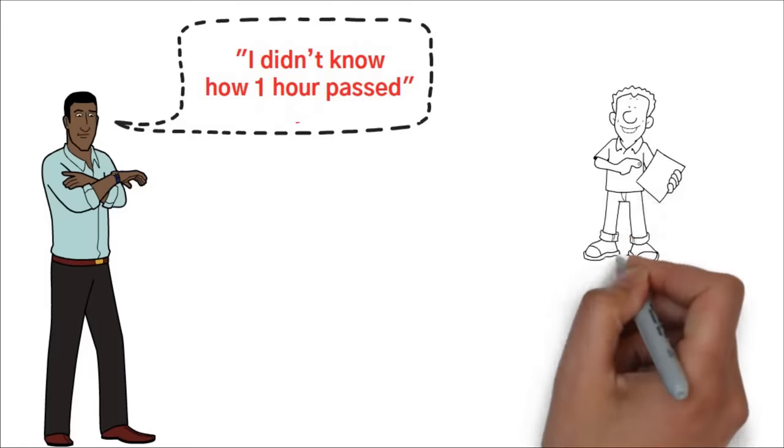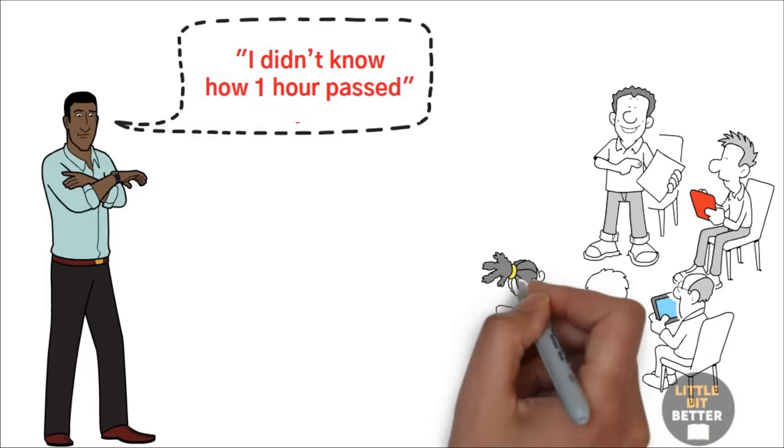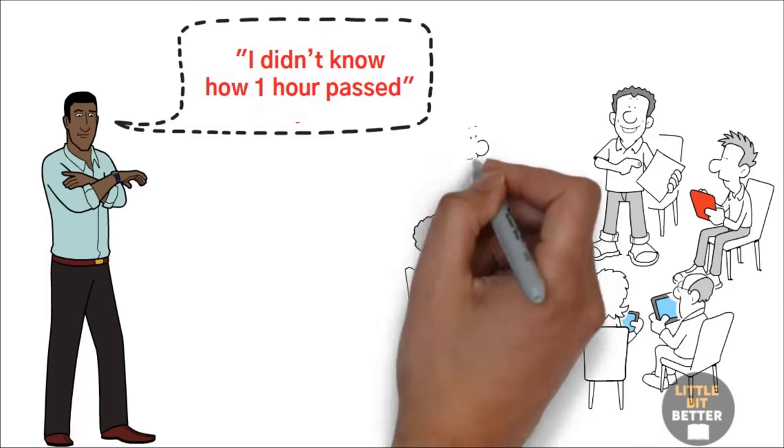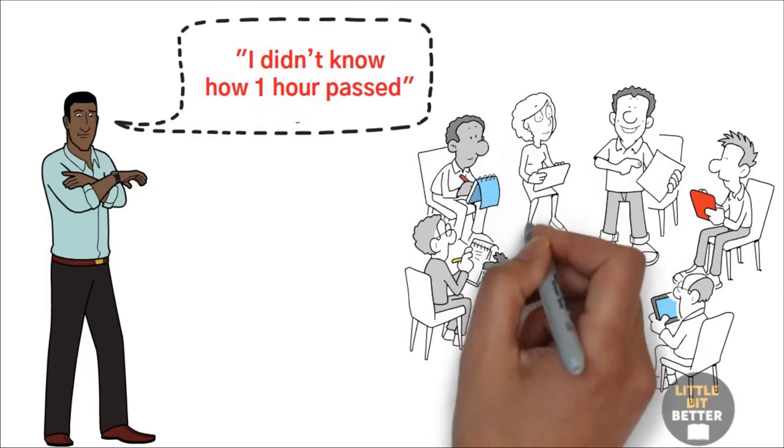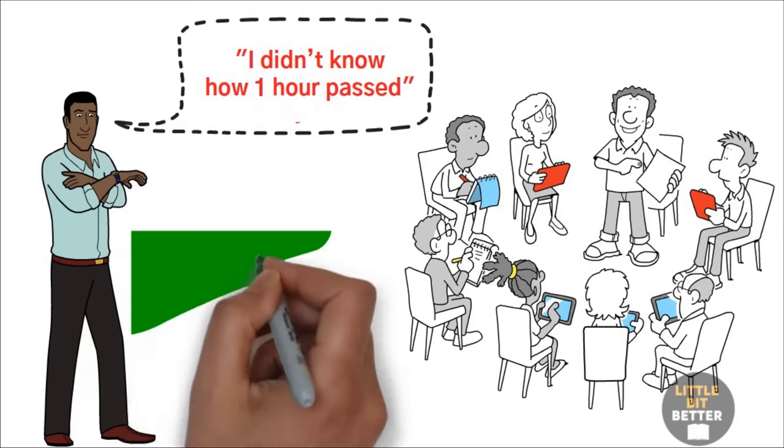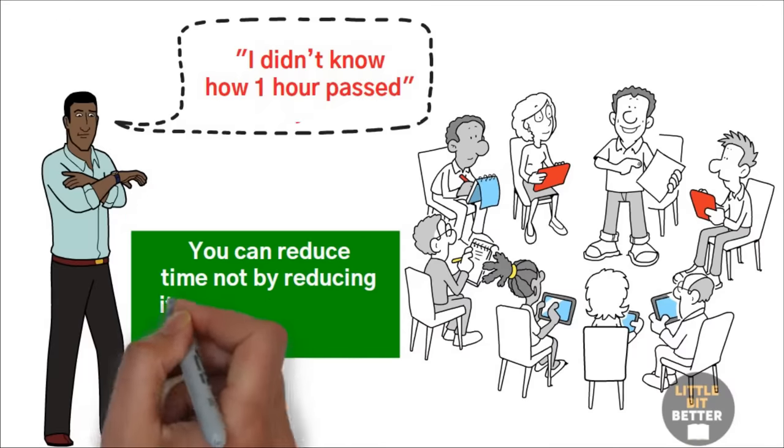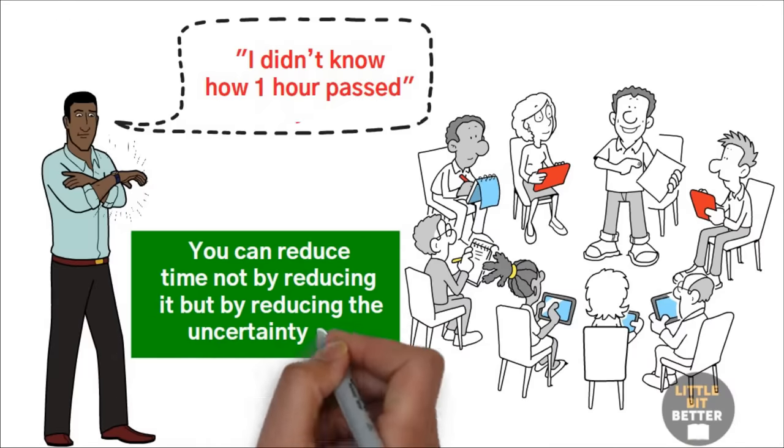We perceive time differently depending on what we do during that time. For example, you have probably said things like, that was the longest five minutes of my life, or I didn't know how one hour passed. Now, look at your own business or job and see how you can apply this knowledge. For example, maybe you can redesign the waiting room in your office so that your customers can do some fun things and forget about waiting. Here's another thing about time: we absolutely hate waiting in uncertainty. You can reduce time not by reducing it, but by reducing the uncertainty of it.